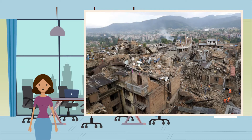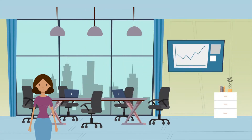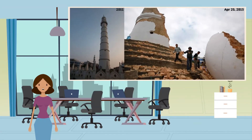1.4 million people were urgently in need of food, water and shelter. The cost of damage was estimated at around 5 billion US dollars. Many historical sites and landmarks were also damaged or destroyed.